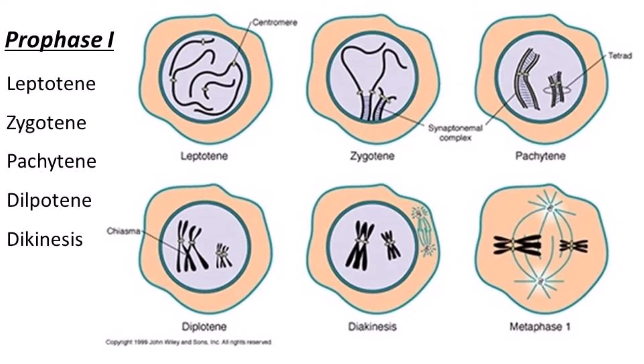Prophase first is subdivided into five stages: leptotene, zygotene, pachytene, diplotene, and diakinesis. First is leptotene. Initially the chromosomes start condensation and they become compact during leptotene.